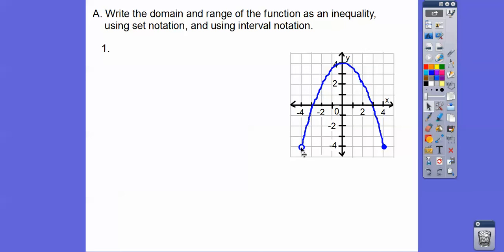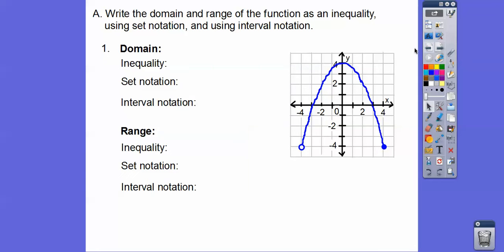So the domain: this graph's leftmost point is at x equals negative 4. But negative 4 is not included, so we're going to have an open circle — no equals bar — just less than or greater than. And it goes all the way to positive 4, where it is included. So x goes from negative 4 to positive 4. Positive 4 is included; negative 4 is not included.